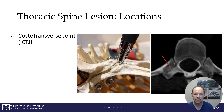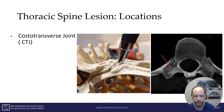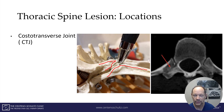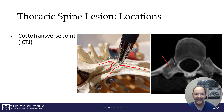The other location is the costal vertebral joint. This is a view from the bottom — it's basically the articulation of the transverse process with the rib head. And you can see in this axial view that this patient has significant arthritis at the costal transverse joint.